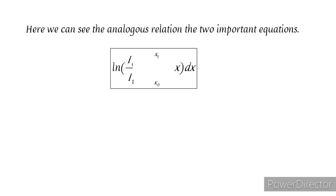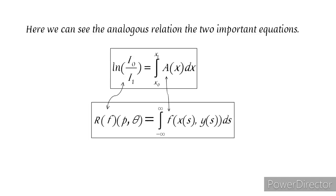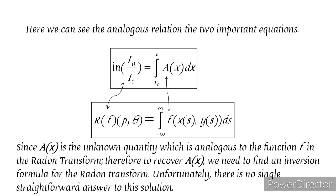Here we can see the analogous relation between the two important equations. Since A of X is the unknown quantity which is analogous to the function F in the Radon transform, therefore to recover A of X, we need to find an inversion formula for the Radon transform. Unfortunately, there is no single straightforward answer to this solution.